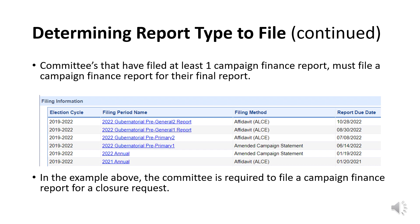If a committee has spent or received more than $1,000 at any point while the committee was active, the committee is required to file a full campaign finance report as their final report. A committee can verify the filing types by logging into MDCRIS and selecting View/Edit Committee Registration from the left side menu. About halfway down the page, the committee will see the Filing Information section. A campaign finance report will be denoted as Campaign Statement or Amended Campaign Statement. In the example on this slide, the committee filed a campaign finance report in 2022, followed by subsequent affidavits. If the committee wants to close out, they are required to file their final report as a campaign finance report, even if the committee spent or received less than $1,000 during the final period. SBE will reject an affidavit if marked as final in these circumstances.